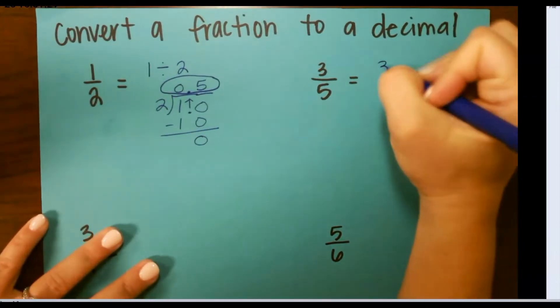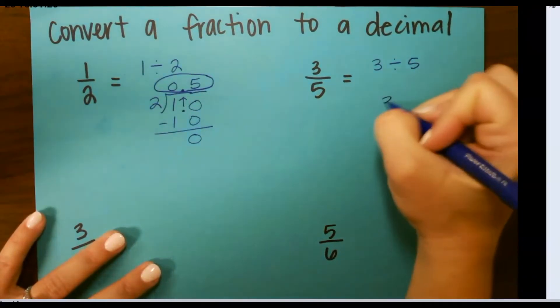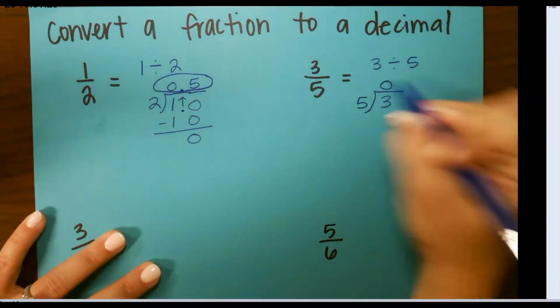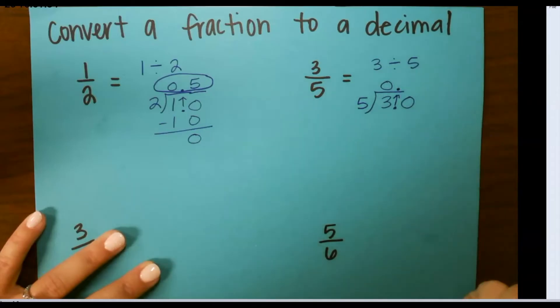Let's look at our next one. 3 fifths would be 3 divided by 5. So we set this up. Again, 5 cannot go into 3, so I add a decimal and a 0 and bring the decimal straight to the top.